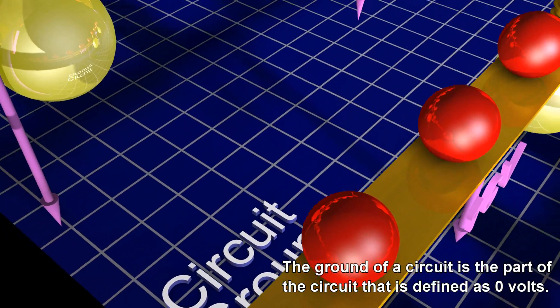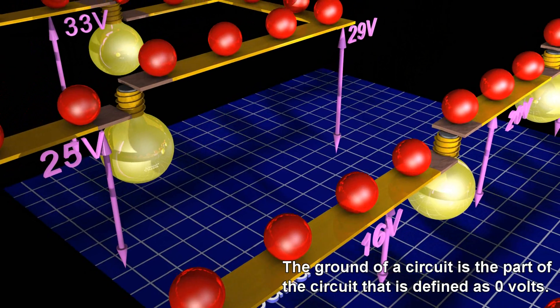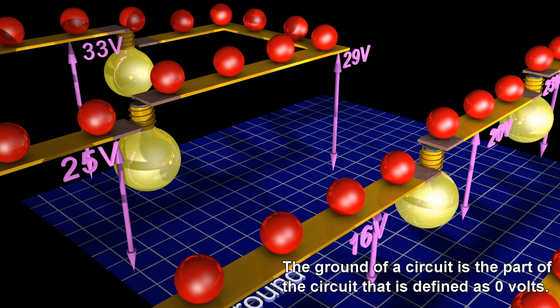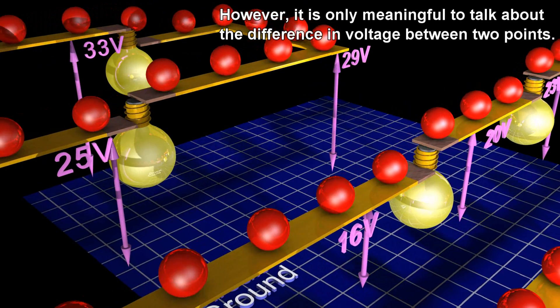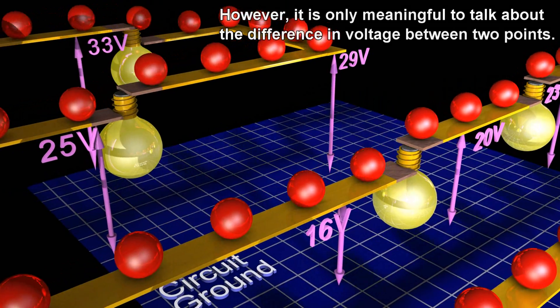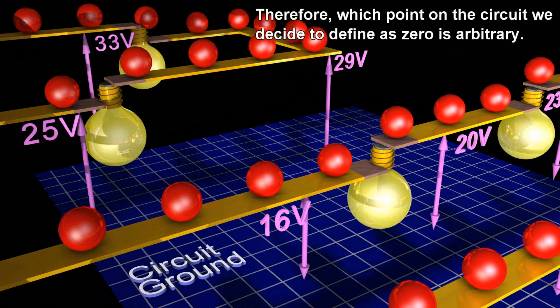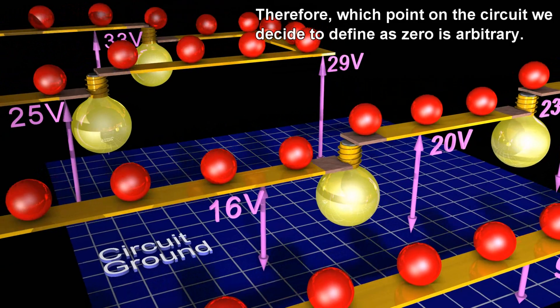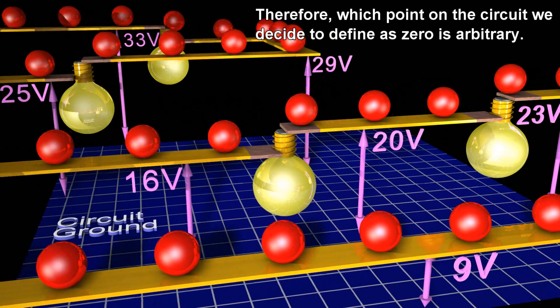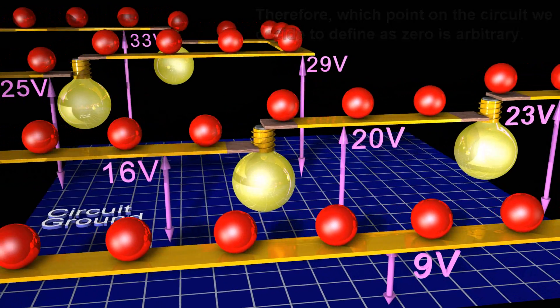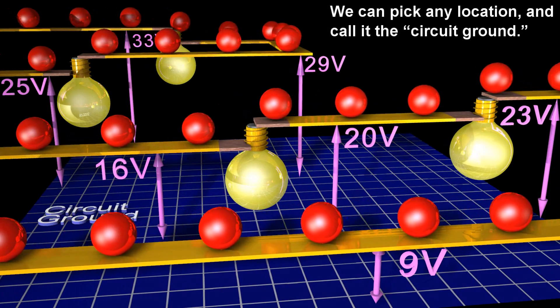The ground of a circuit is the part of the circuit that is defined as zero volts. However, it is only meaningful to talk about the difference in voltage between two points. Therefore, which point on the circuit we decide to define as zero is arbitrary. We can pick any location and call it the circuit ground.